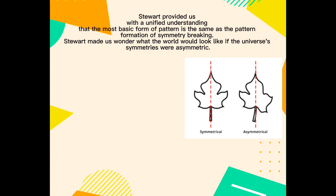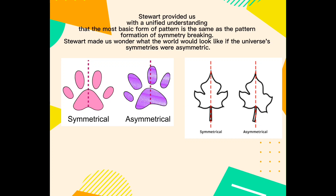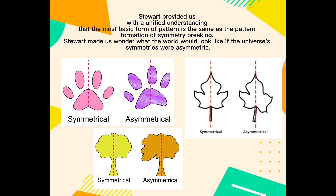Stewart provided a unified understanding that the most basic form of pattern is the same as the pattern formation of symmetry breaking. He made us wonder what the world would look like if the universe's symmetries were preserved. The most fundamental method of pattern formation reversed this entire universe — meaning our universe could have been different, arising by breaking symmetry in a different way. The same basic mechanism of symmetry breaking governs the cosmos, the atom, and us.